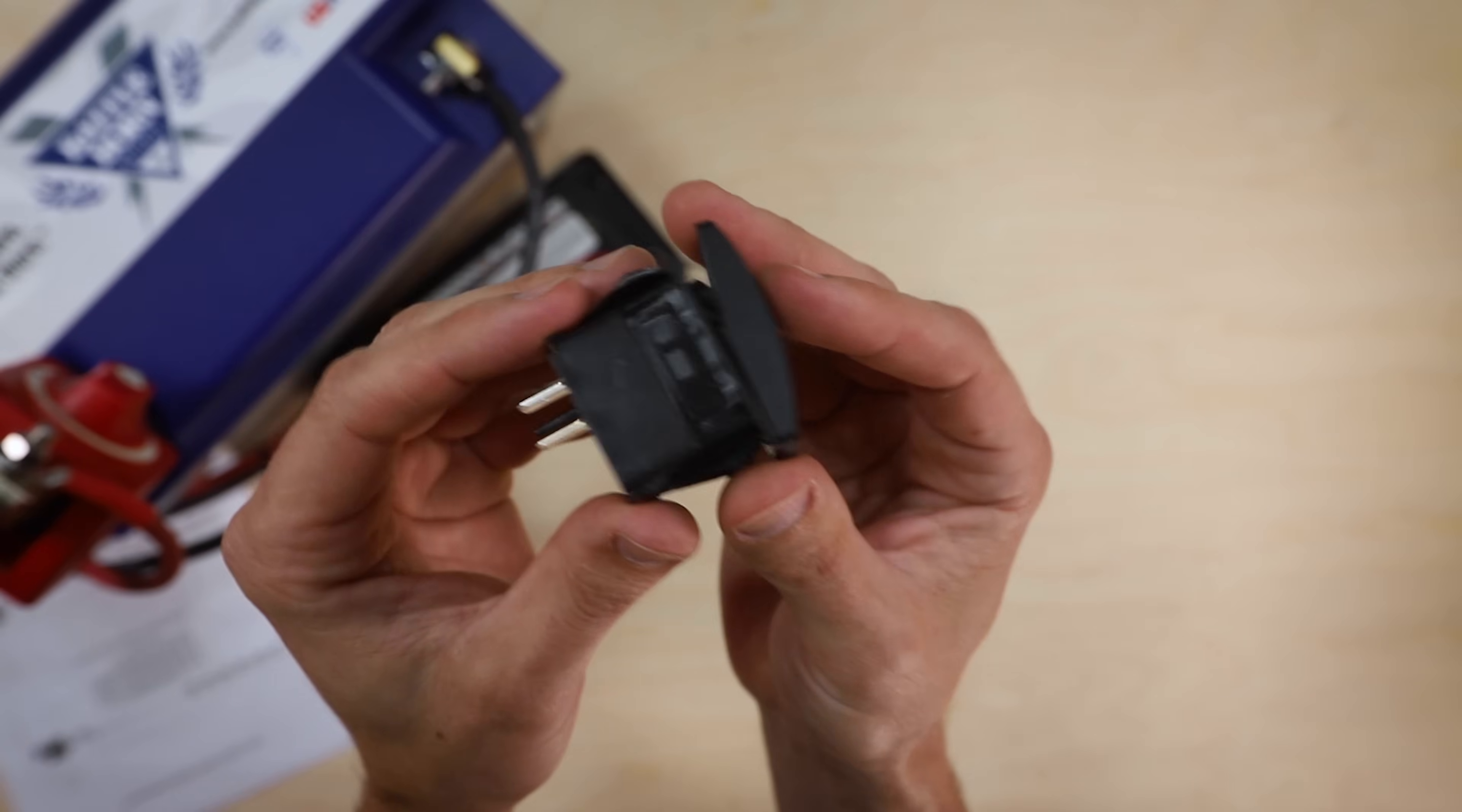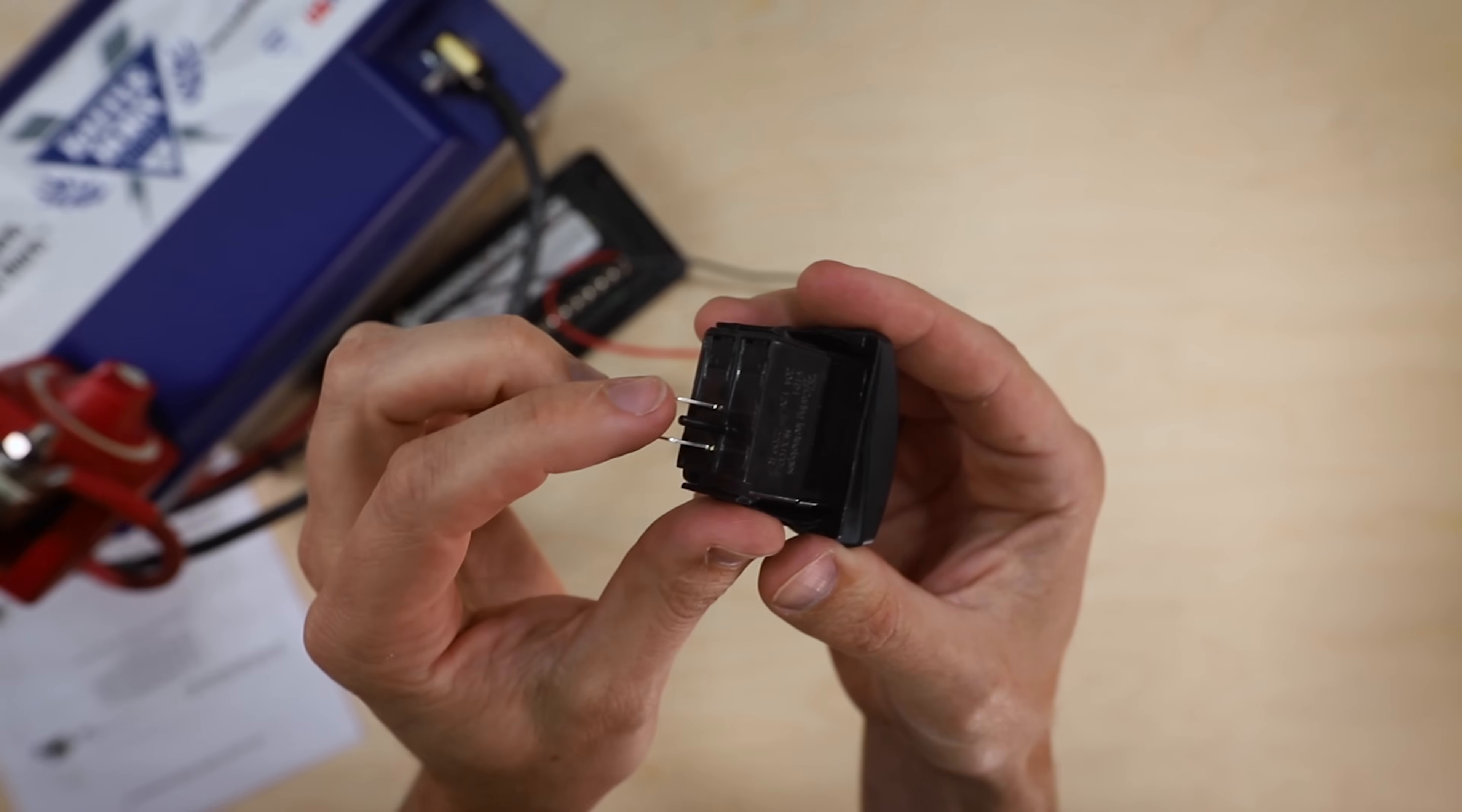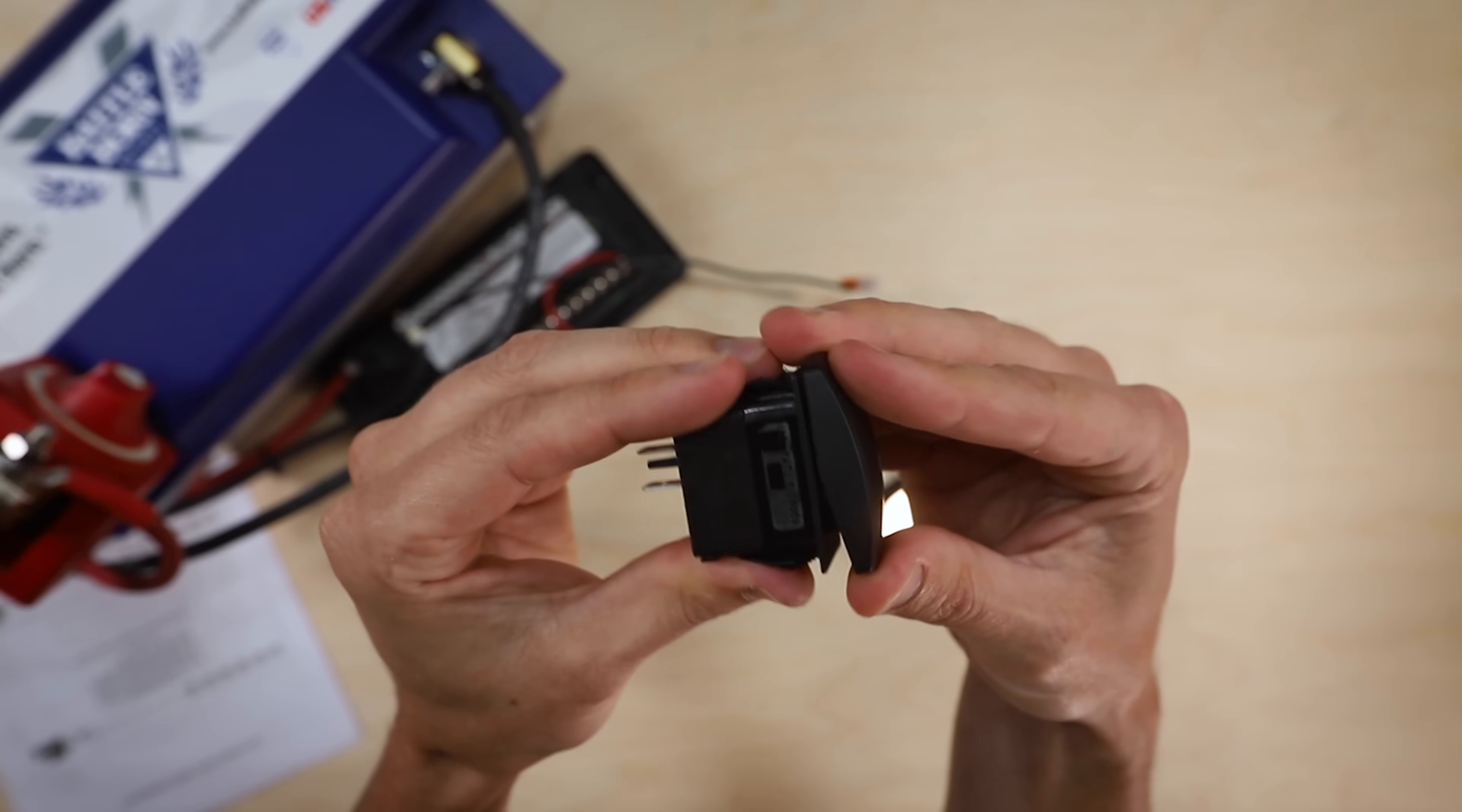Here is the switch that we're using for this project and pretty much all of the other circuits in this build for the most part. Pretty simple switch here, just a simple on-off switch. Power comes in, power goes out. We have a switch here, just goes back and forth.